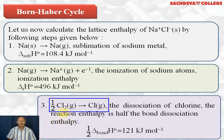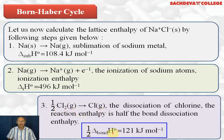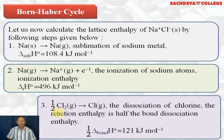The third step is breaking the bond between Cl₂. We require bond dissociation energy, but we need only one chlorine atom, so we use half a mole of chlorine. For one mole of chlorine, bond dissociation energy is 242 kilojoules per mole. For half a mole, it will be 242 divided by 2, that is 121 kilojoules per mole — this energy is required to break the Cl–Cl bond in half a mole of Cl₂.